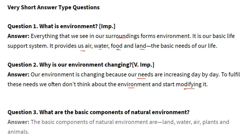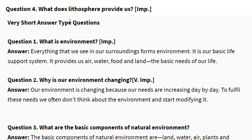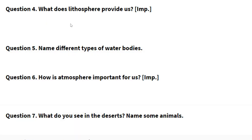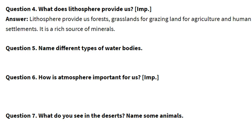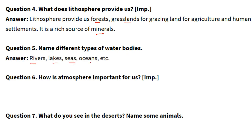What are the basic components of the natural environment? The basic components of the natural environment are land, water, air, plants and animals. The lithosphere provides us forests, grassland for grazing, land for agriculture and human settlements — it is a rich source of minerals. Different types of water bodies include rivers, lakes, seas and oceans.